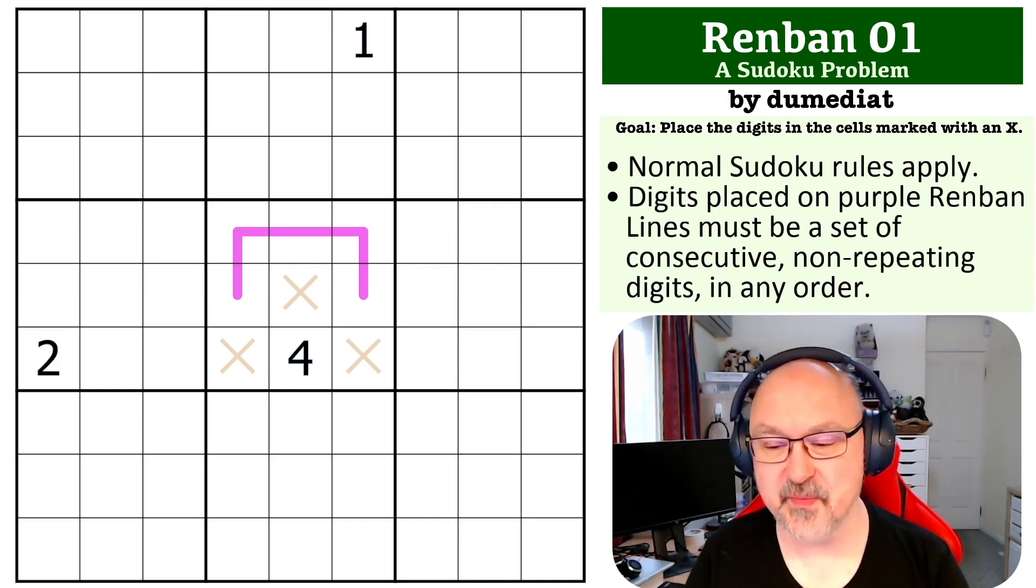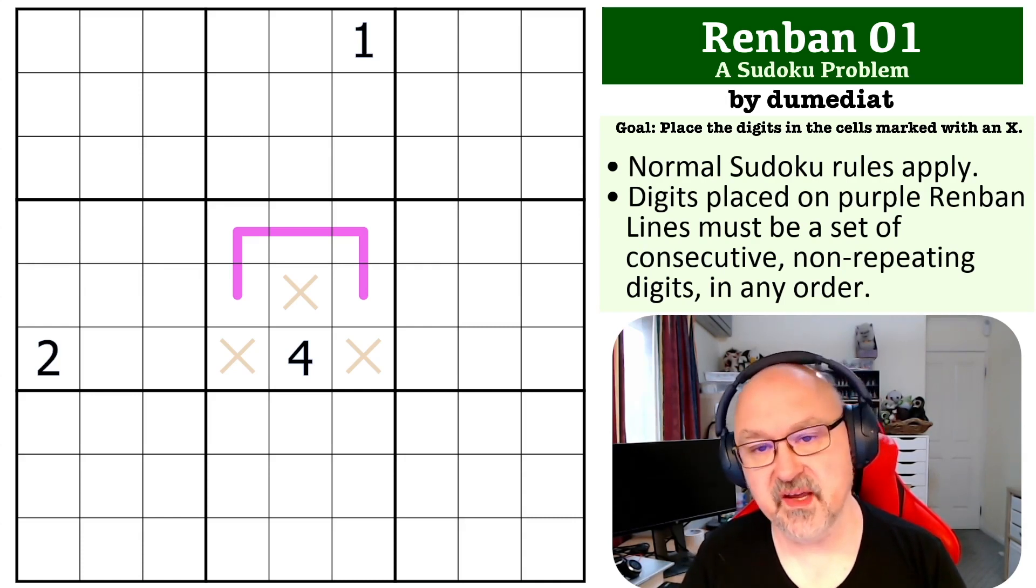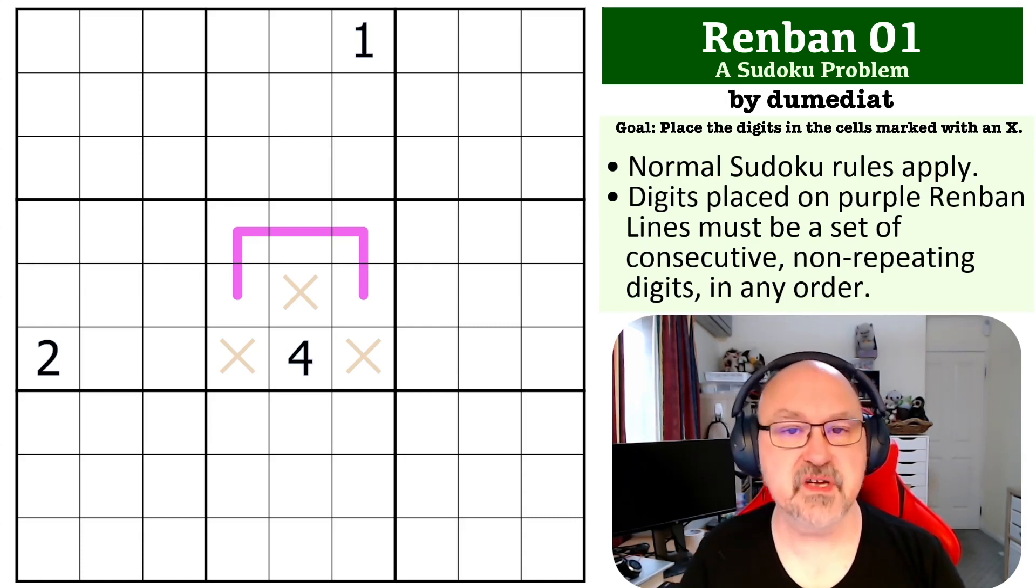This one is pretty easy, I think, so you shouldn't have too much of a problem. There'll be a link to the problem below where you can give this one a try. The rules about Renban lines is they must contain a set of consecutive non-repeating digits in any order.